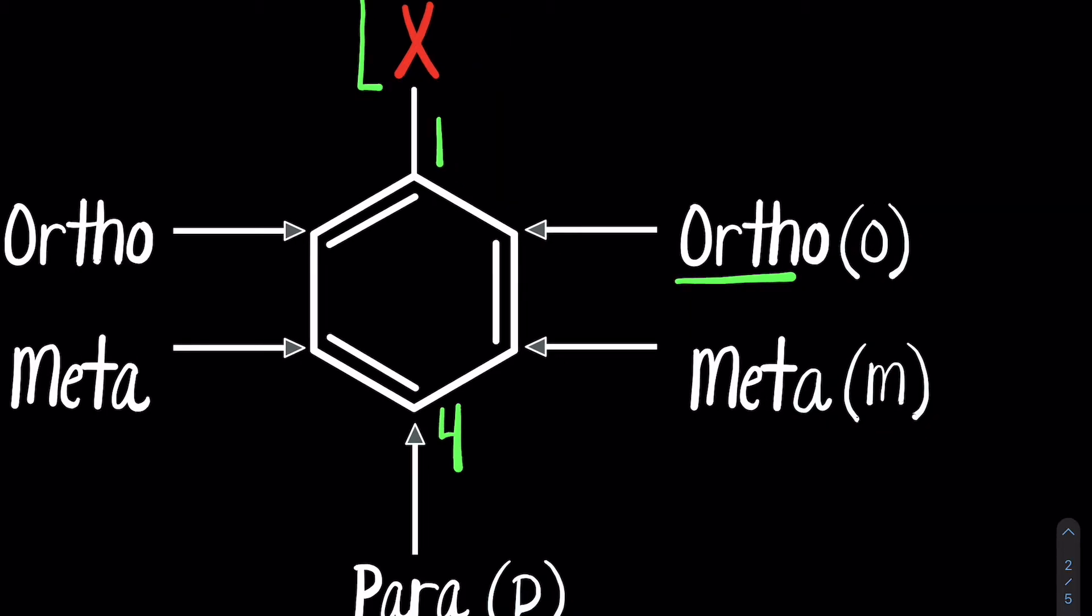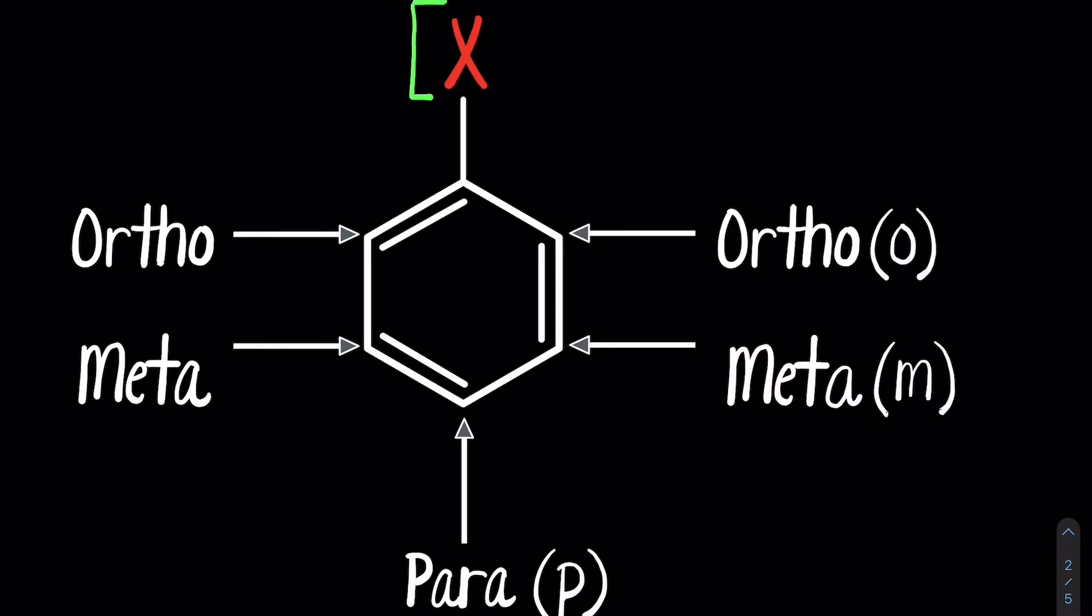Each of these can be abbreviated O, M, or P, and these are vital when naming aromatic compounds. Each of these abbreviations, O, M, and P, signifying ortho, meta, and para, are only used with disubstituted aromatic compounds.